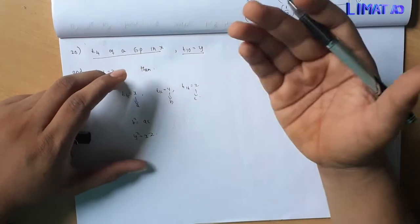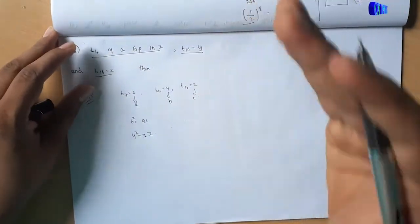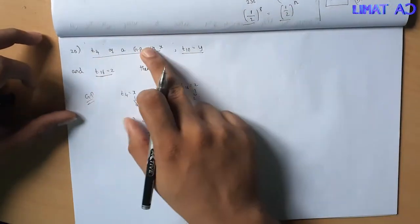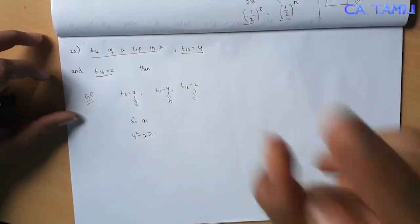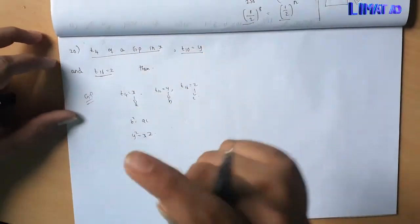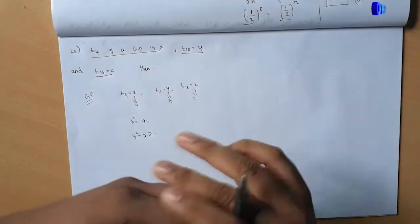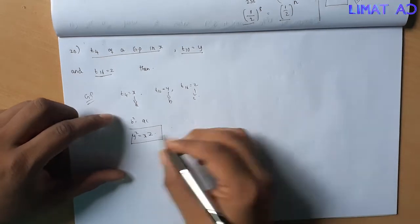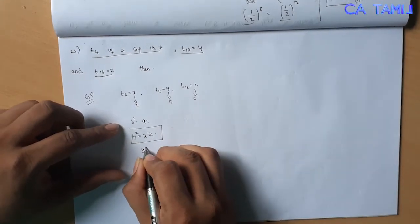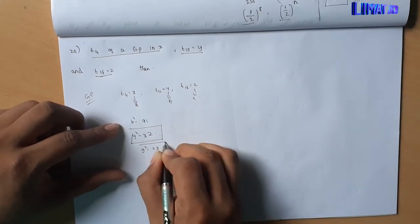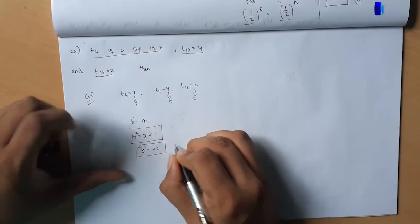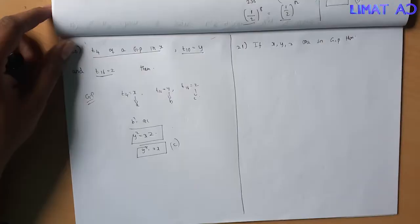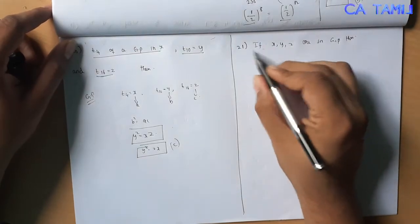So the answer uses the GP property. You can choose option accordingly. Sum numbers 20 and 21 are very simple and can be solved in a single step. Let's now look at sum number 21, which similarly involves GP properties.